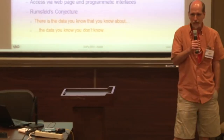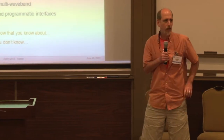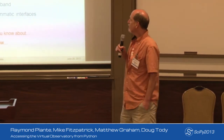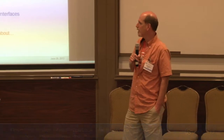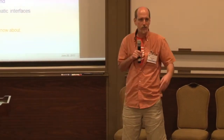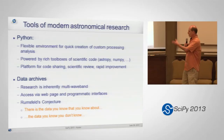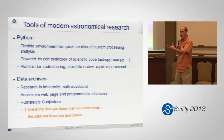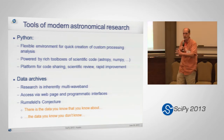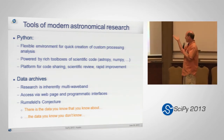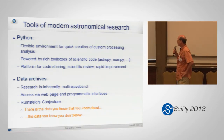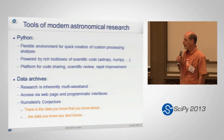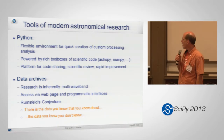Among the emerging trends defining modern astronomical research, there are two I want to highlight. The first is the rise of Python as an environment for doing research. Part of this is the blurring of the line between developers and users, enabled by the flexibility that Python provides — it's a very powerful tool for modern research.